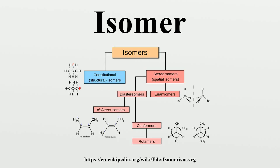In skeletal isomers, the main carbon chain is different between the two isomers. This type of isomerism is most identifiable in secondary and tertiary alcohol isomers. Tautomers are structural isomers of the same chemical substance that spontaneously interconvert with each other, even when pure. They have different chemical properties and, as a consequence, distinct reactions characteristic to each form are observed. If the interconversion reaction is fast enough, tautomers cannot be isolated from each other.